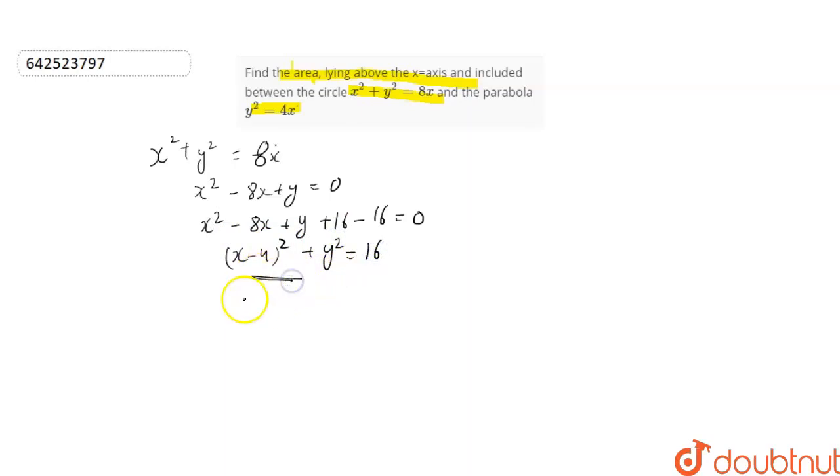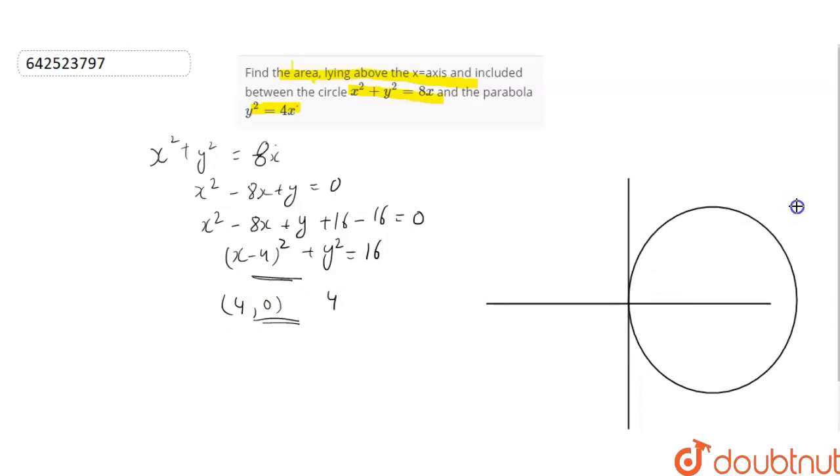This is the equation of circle with center 4, 0 and radius 4. So, center will be 4, 0.